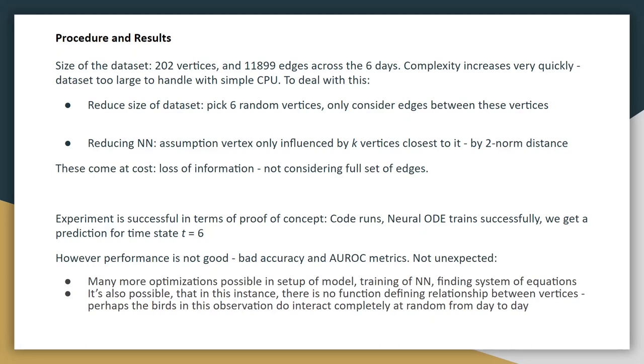So a couple of things we tried to do to deal with this. We reduced the size of the dataset, picked six random vertices, and only considered the edges between those vertices, which reduced the size of the graph. And then we also reduced the size of the neural network by making the assumption that a vertex might only be influenced by, say, the k closest vertices to it. And so the input for the neural network for one particular vertex would only be the distance from that vertex to the k closest to it, rather than all the vertices there. And so that reduces the size of the neural network significantly. Now these will obviously come at a cost, which is a loss of information, because we're not considering a full set of edges.